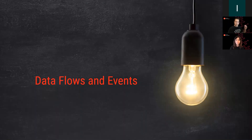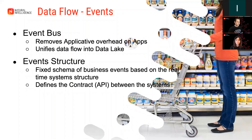Let's talk a bit about the top part — the events. We actually slice them into two parts: the event bus, which is the mechanism that gets data from the serving and applicative part of the system, and the structure of the event itself. It's two different things — one is the mechanism, the other is the format in which we send the data. It's pretty important to understand that the event structure is actually an API — it's the contract between your applications and your data lake. This is the best way to make sure your data is consistent.